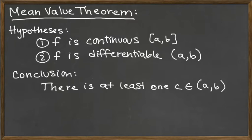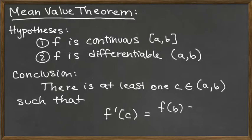So we have there is at least one c in (a,b) such that - and then this is the conclusion part that people usually remember for the mean value theorem - f'(c) is equal to [f(b) - f(a)] / (b - a). Okay, and so that's the statement of the theorem, but let's digest this a little bit more here.